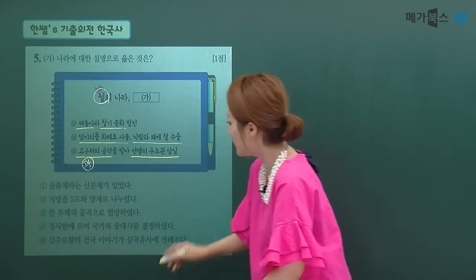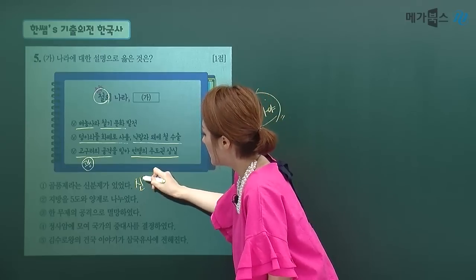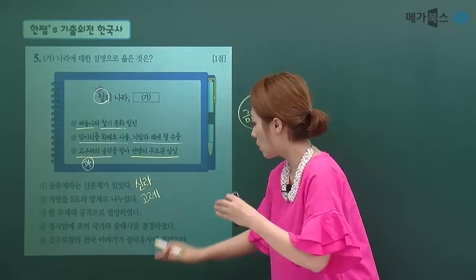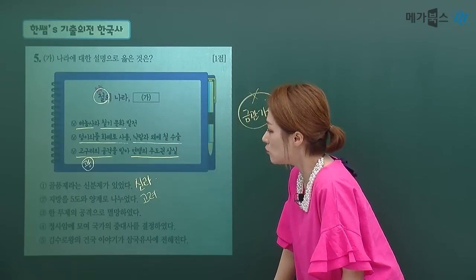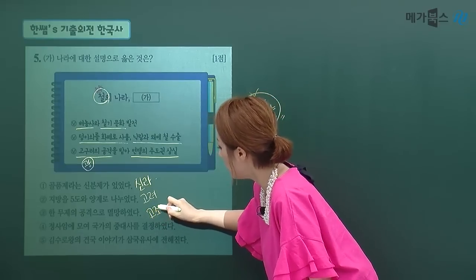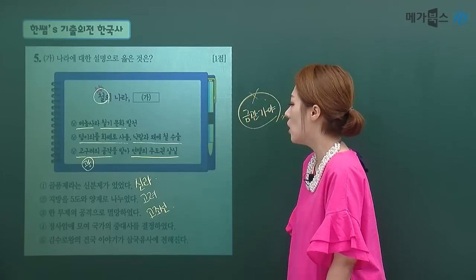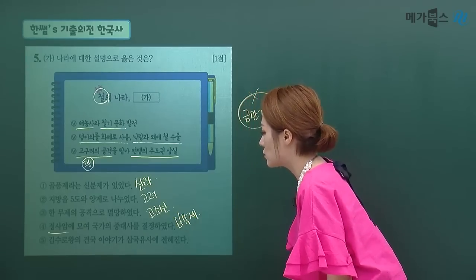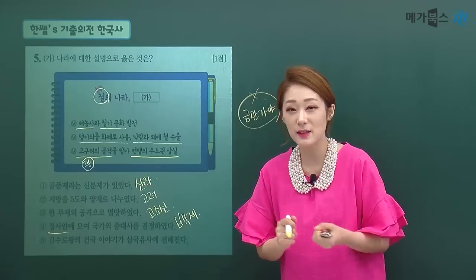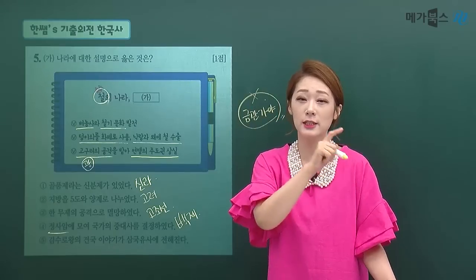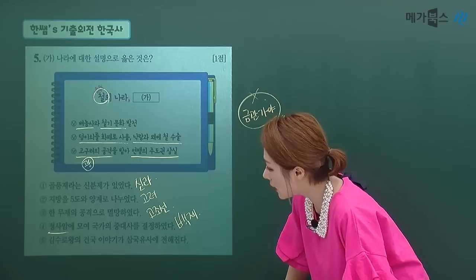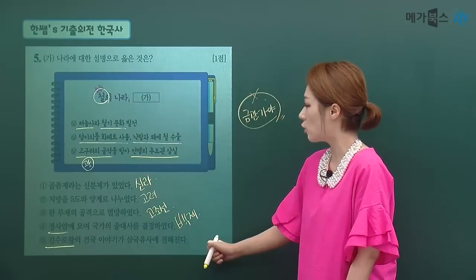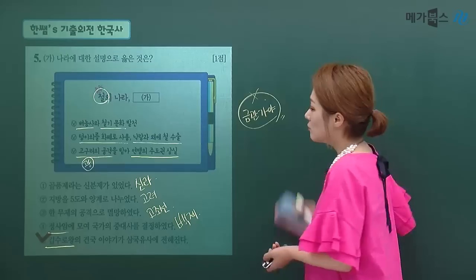보기를 보면, 골품제는 신라의 엄격한 신분제도이고, 지방을 5도 양계로 나눈 것은 고려시대 지방행정구역입니다. 한무제의 공격으로 멸망한 것은 고조선이고, 정사암에 모여 국가중대사를 결정한 것은 백제의 귀족회의입니다. 고구려는 제가 회의, 백제는 정사암 회의, 신라는 화백회의가 각국의 귀족회의입니다. 김수로왕의 건국이야기가 삼국유사에 전해진다는 것이 금관가야에 대한 설명으로 정답 5번입니다.